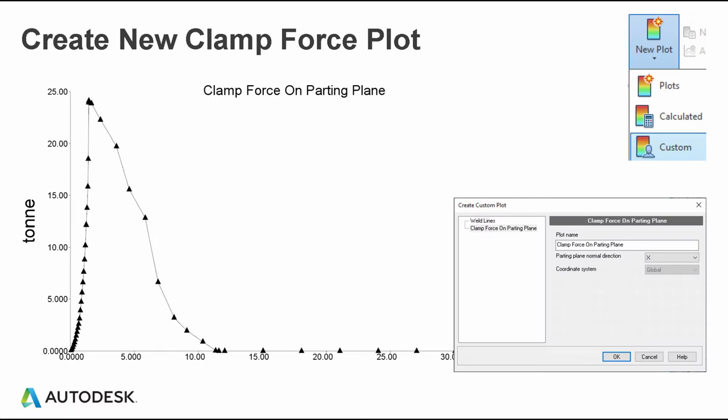If you did not orient the model correctly, now would be a great time to use New Plot, Custom Clamp Force on Parting Plane. You can adjust your parting plane normal direction based on the correct vector, and it will generate a new plot with the correct clamp force on parting plane. This saves you from having to rerun the analysis — though I would encourage you to rerun. But if it's late on a Friday afternoon, this is a nice way to double-check the clamp force prediction.